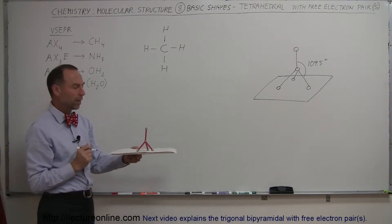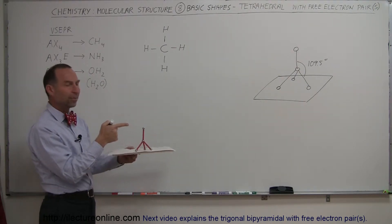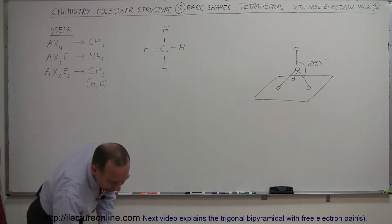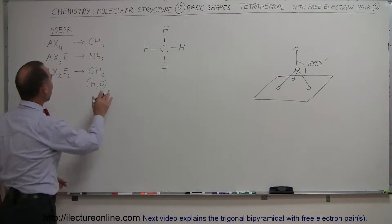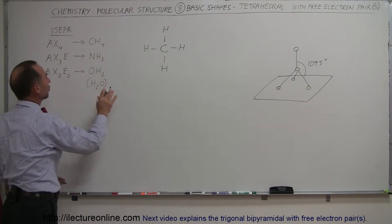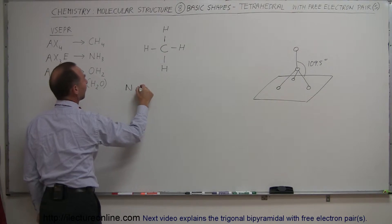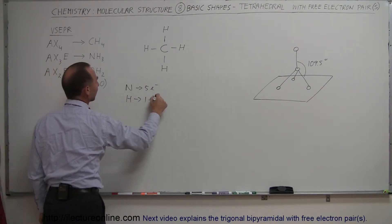But what happens when one of those atoms now disappears and is exchanged for a pair, an electron pair, a free pair? So that would happen when we have the ammonia atom. Notice with ammonia, we have nitrogen that starts out with five valence electrons, and we have hydrogen that starts out with one valence electron.